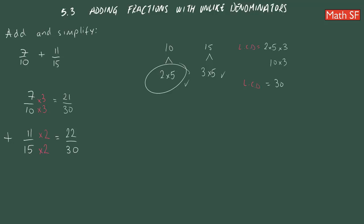Now that they have the same denominators, we can just add these numerators. 21 plus 22. 1 plus 2 is 3. 2 plus 2 is 4. So, it will be 43 over 30.